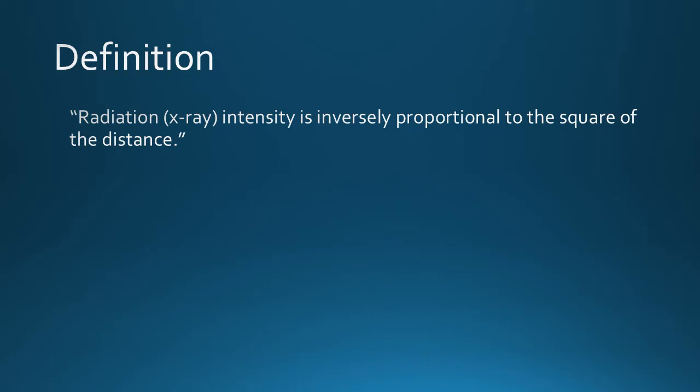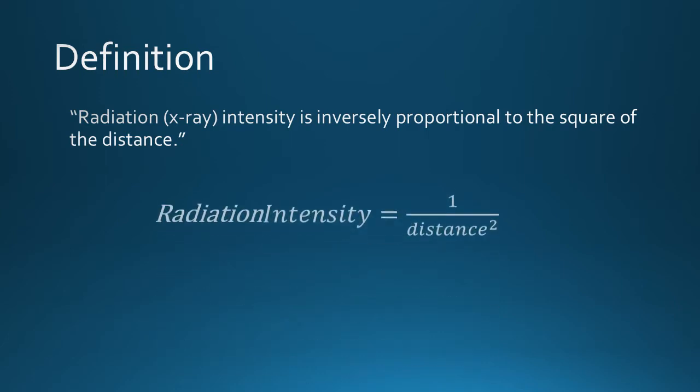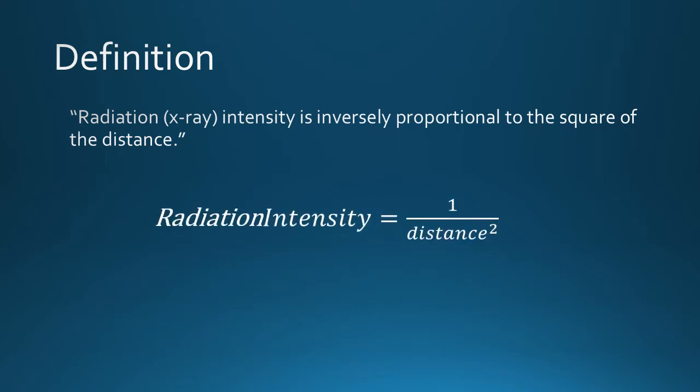Simply put, radiation intensity changes with the inverse of the distance squared. In mathematical terms, this translates to I equals 1 over d squared. As distance increases, radiation intensity will decrease, and vice versa.